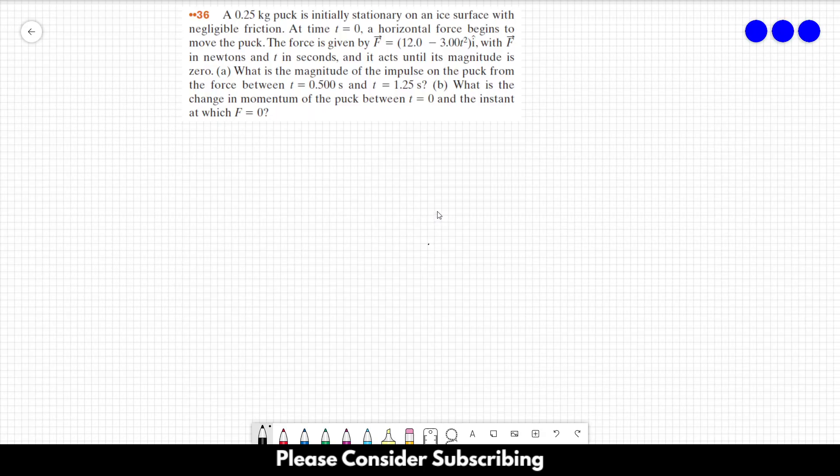Number 36, a 0.25 kg puck is initially stationary on a surface with negligible friction. At time t equals 0, a horizontal force begins to move the puck. The force is given by F equals 12 minus 3t squared in the i direction, with F in newtons and t in seconds,